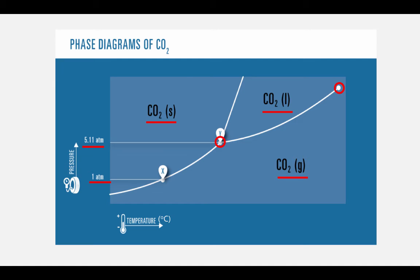In fact, this phase diagram shows you what we already know about CO2. Carbon dioxide will sublime at room temperature and pressure, which means that CO2 will go directly from a solid to a gas.